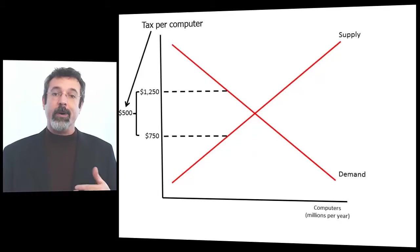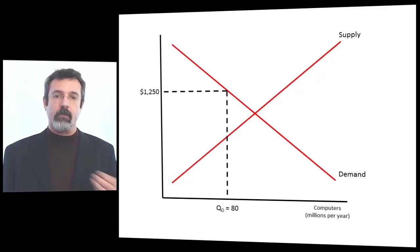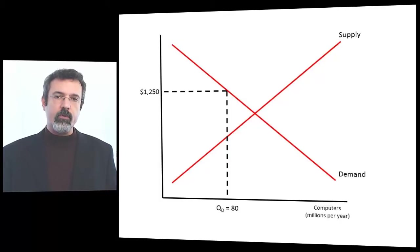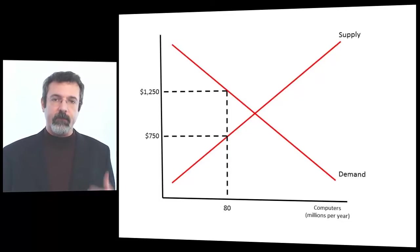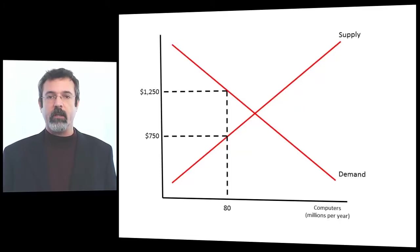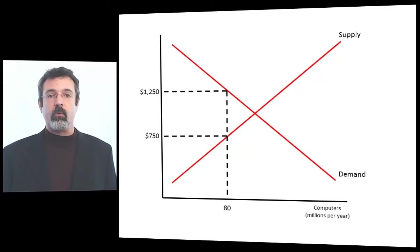The picture looks messy, but it is in equilibrium, and we can see that by looking at these two prices. When consumers pay a price of $1,250 including the tax, they're willing to buy 80 million computers per year — this is the quantity demanded. When producers receive $750 per computer net of the tax, producers are willing to offer 80 million computers a year for sale — this is the quantity supplied. Equilibrium is the point at which quantity demanded equals quantity supplied, and because both are 80 million computers, we have equilibrium here.